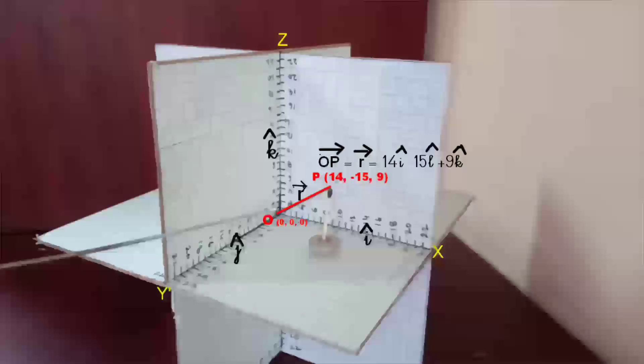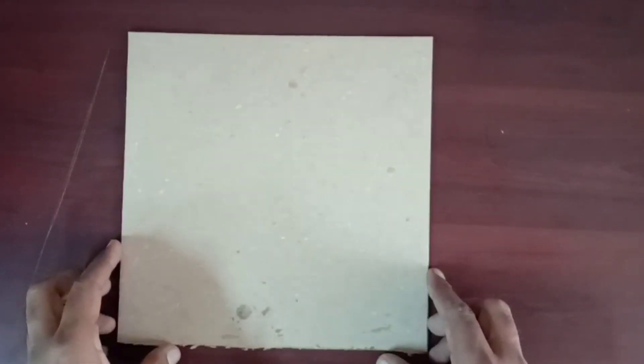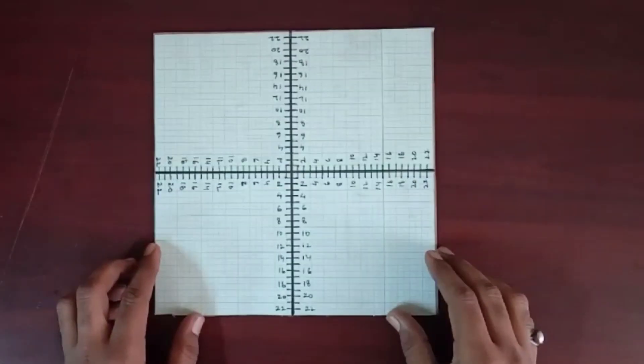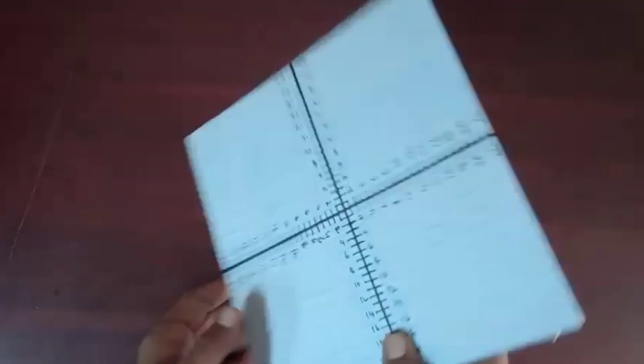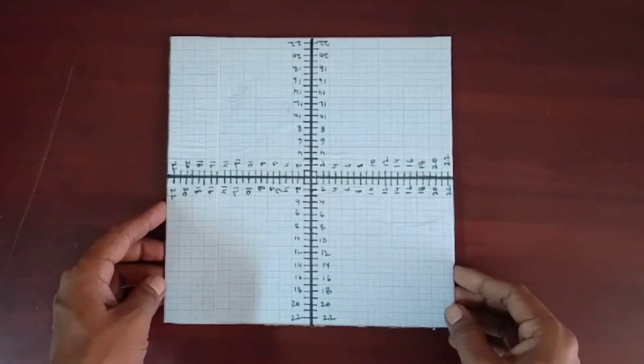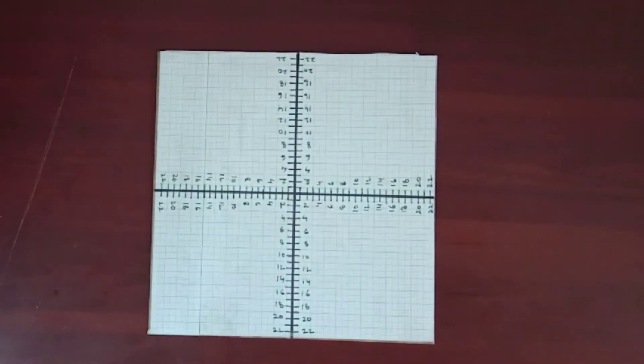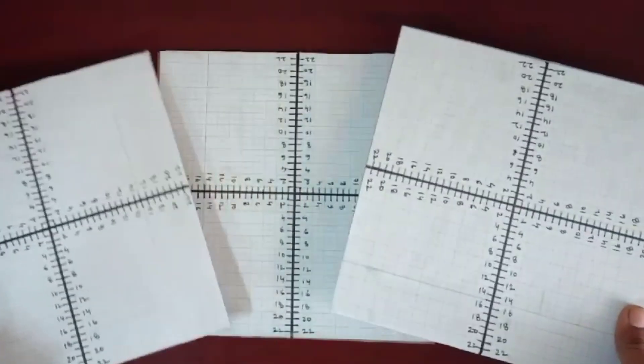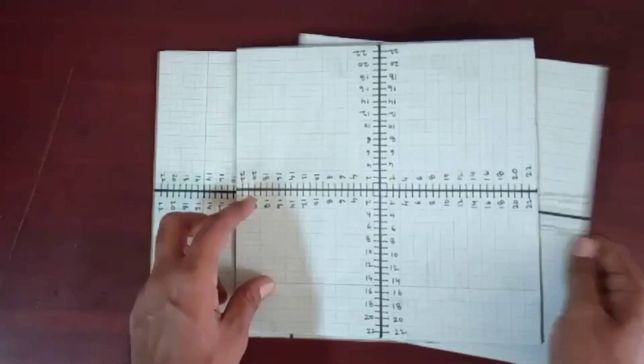Let us make this model and then we will learn how to demonstrate a position vector of a point in space. To make this model, take a square cardboard, paste graph paper on both sides and mark both axes on it. Do this for three identical square cardboards.